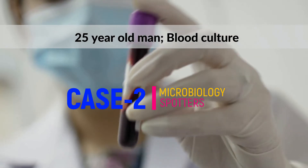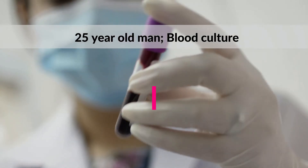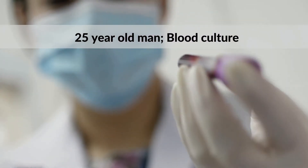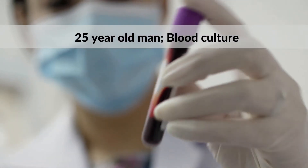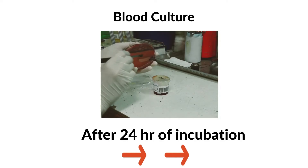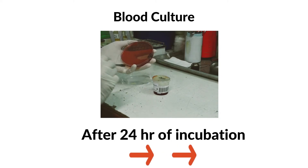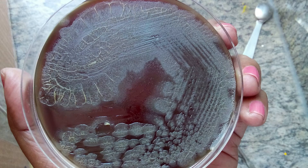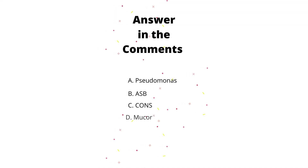Coming to the second case: a blood culture of a 25-year-old male was done; after two days the blood culture shows a positive result, and subculture shows growth of these colonies. Identify the probable organism. To understand this, it is important to understand the different types of colonies produced by each organism.